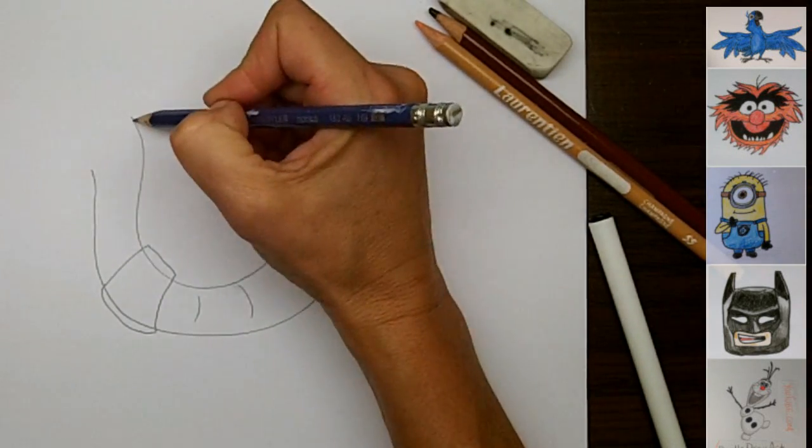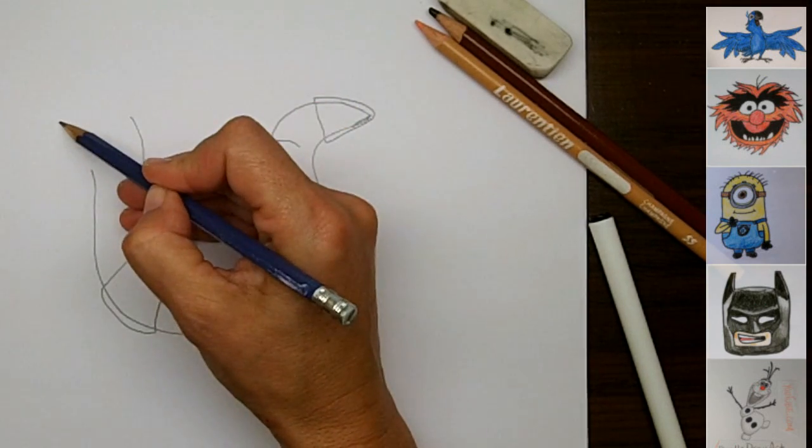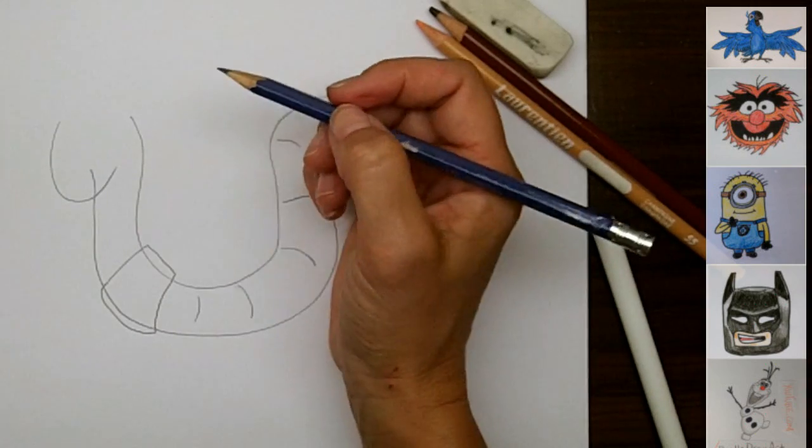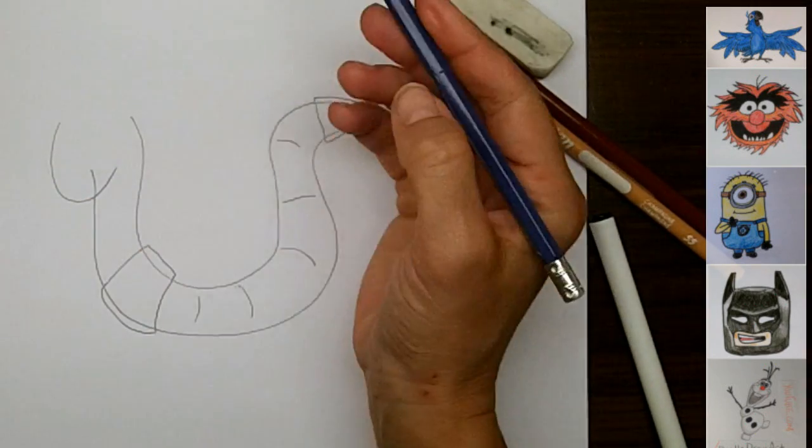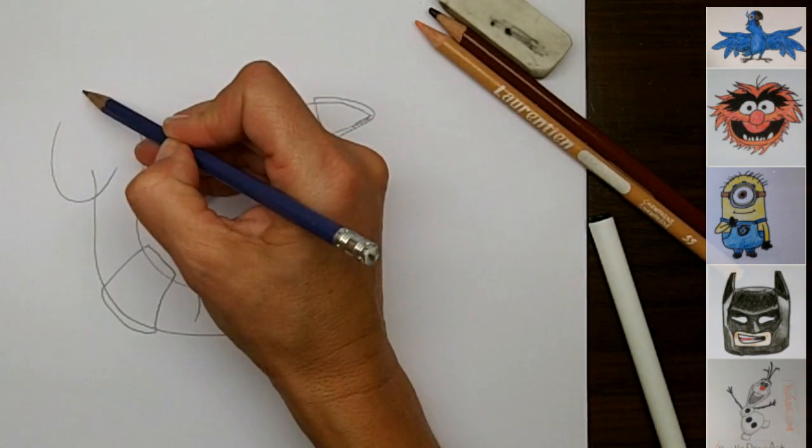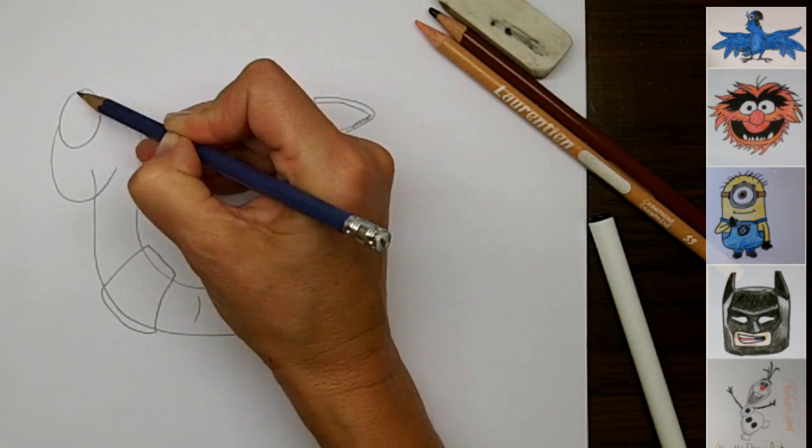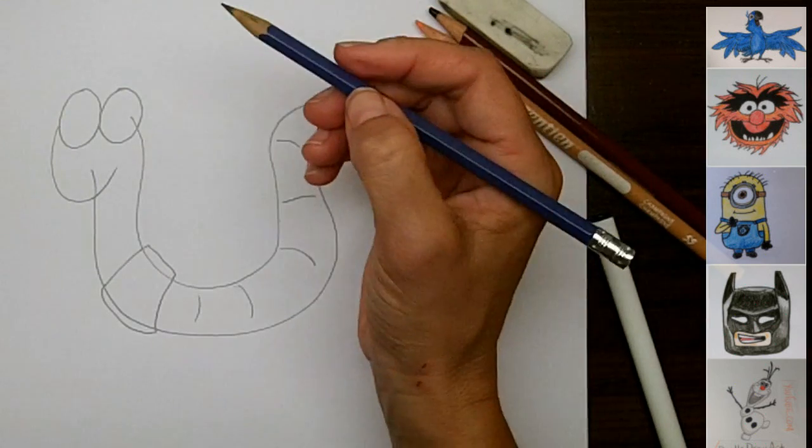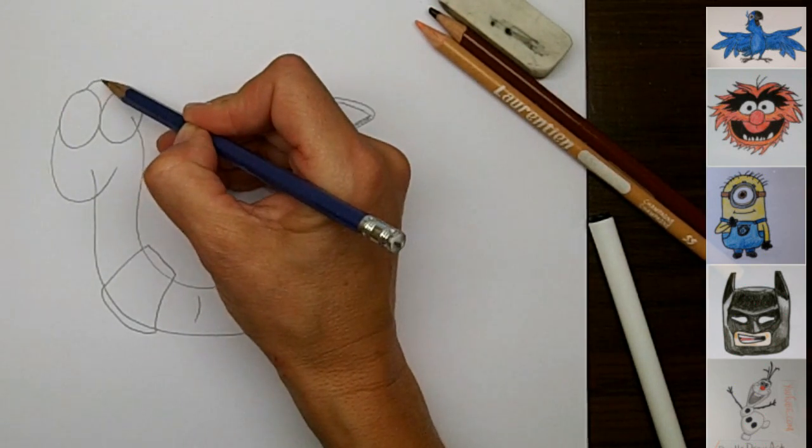So now my worm is actually a cartoon. So I'm going to make him very, very cute. This is going to be his face, his snout. And he's going to have big round eyes like this. I saw a piece of clip art with a worm that looked a lot like this. And I thought I would draw one that looks similar.